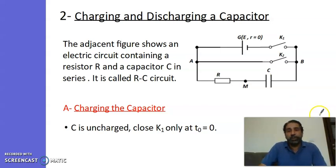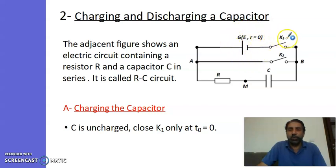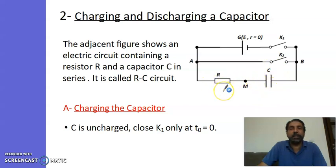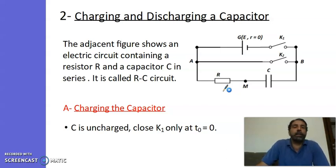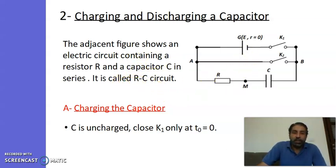We have connected this circuit. There is an ideal generator, two switches K1 and K2, a capacitor, and a resistor. The role of the resistor is to control the rate of charging and discharging of the capacitor. This circuit is called an RC circuit.